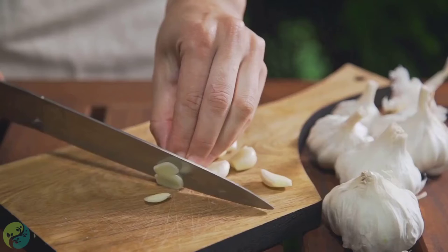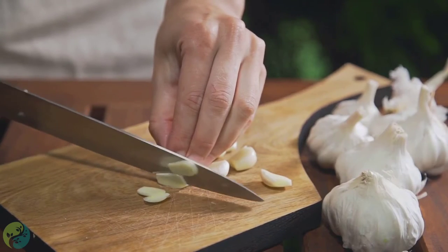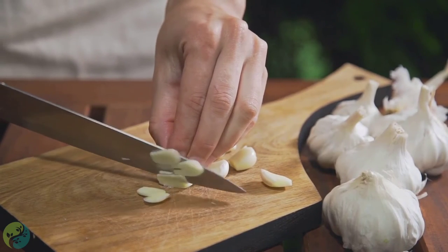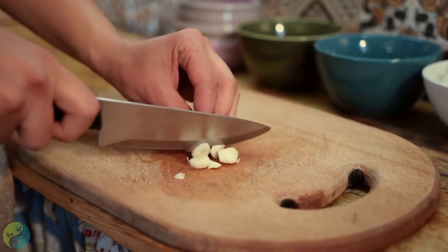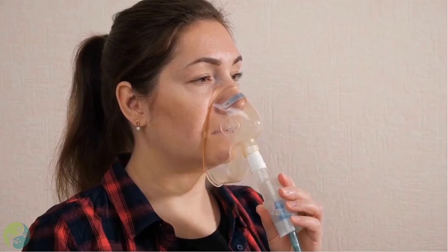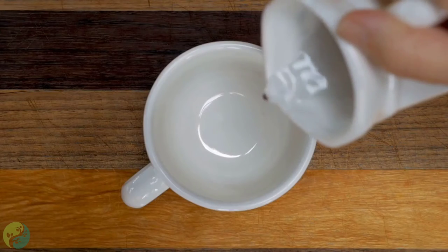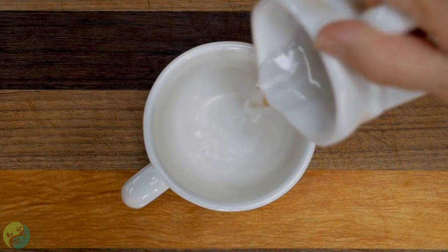6. Garlic. Garlic has antibacterial properties that are believed to alleviate congestion. Add fresh garlic to your favorite meals, or you can try the quirky home remedy of breathing in garlic steam by adding freshly sliced cloves to a boiling hot cup of water.